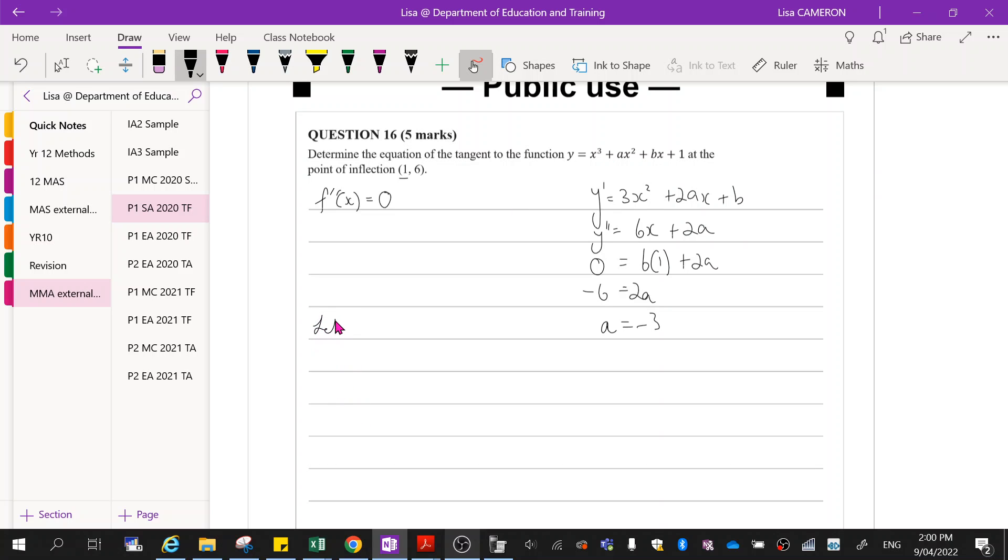So now I'm going to let a equal negative 3, let x equal 1 and y equal 6. So that's going back into f(x), our regular equation.